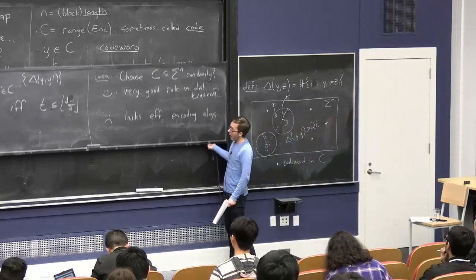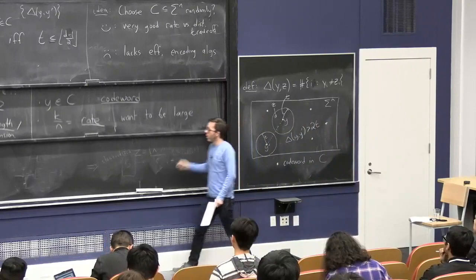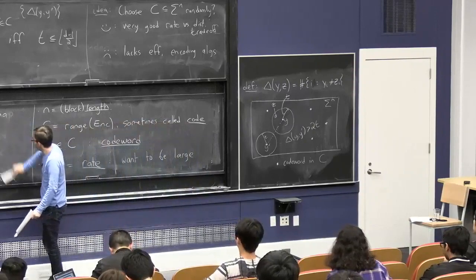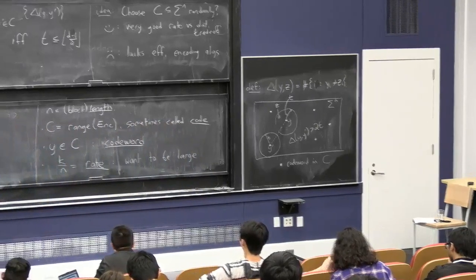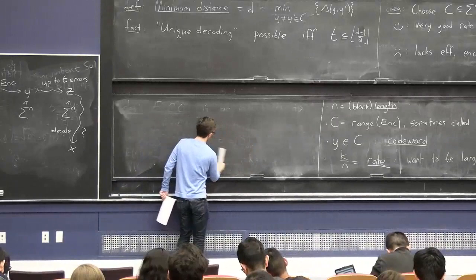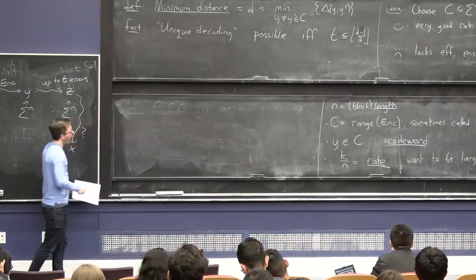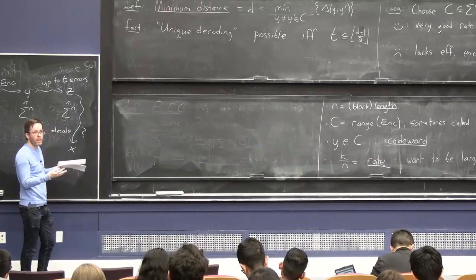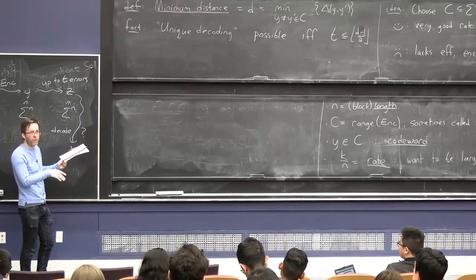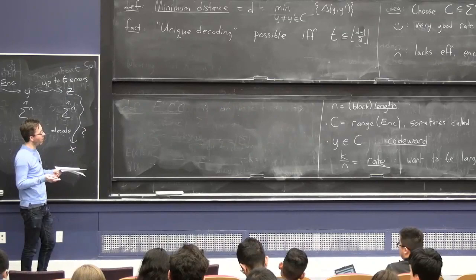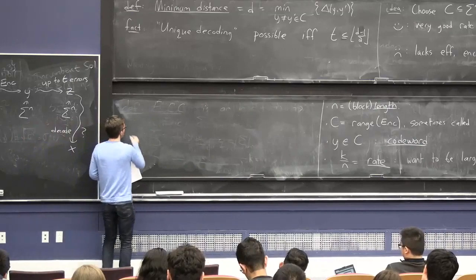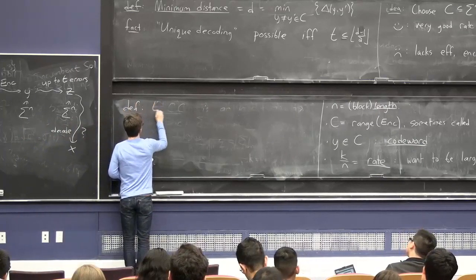Let me tell you about a first basic idea of error correcting codes, which is very important: linear error correcting codes. Linear error correcting codes have as one nice property that the encoding algorithm is always efficient. In fact, essentially all known good error correcting codes are linear error correcting codes.